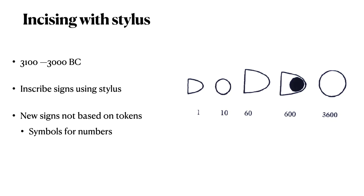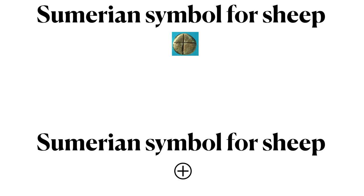Now it's time to revisit the sheep token discussed earlier. Recall that the sheep symbol in Sumerian was problematic for the pictographic theory of language origin. The Sumerian written symbol for sheep was a circle with a plus or cross sign inscribed inside it — a symbol with no apparent relation to a drawing of a sheep, yet it was a very early symbol used for sheep. However, recall that the sheep token was a disk with a cross or plus sign inscribed on it. So the sheep token apparently directly became the Sumerian written symbol for sheep — a clear connection between the token system and early writing.